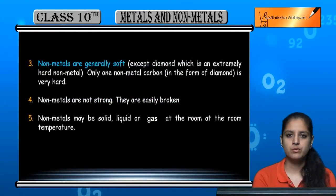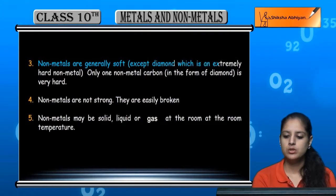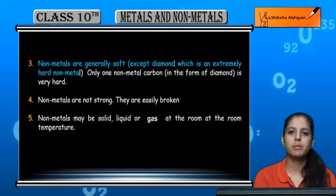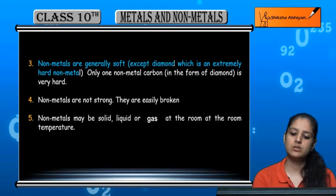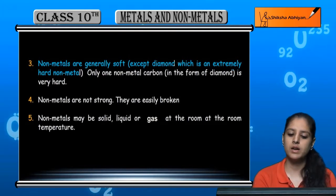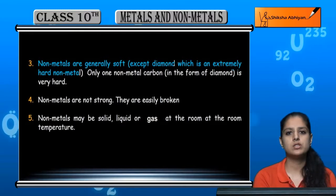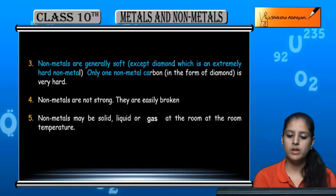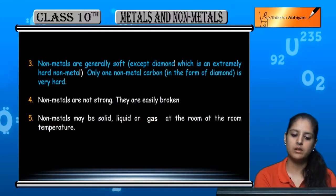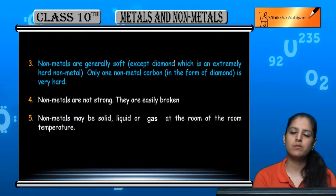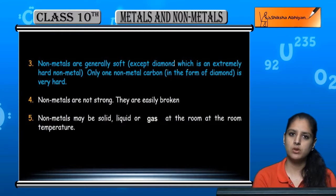Non-metals are generally soft. Usually they are very soft. The only exception is diamond, which is very hard. Diamond is the hardest known substance and it is a non-metal. Only diamond is an exception to the property of hardness. All other non-metals, including graphite, are generally soft.